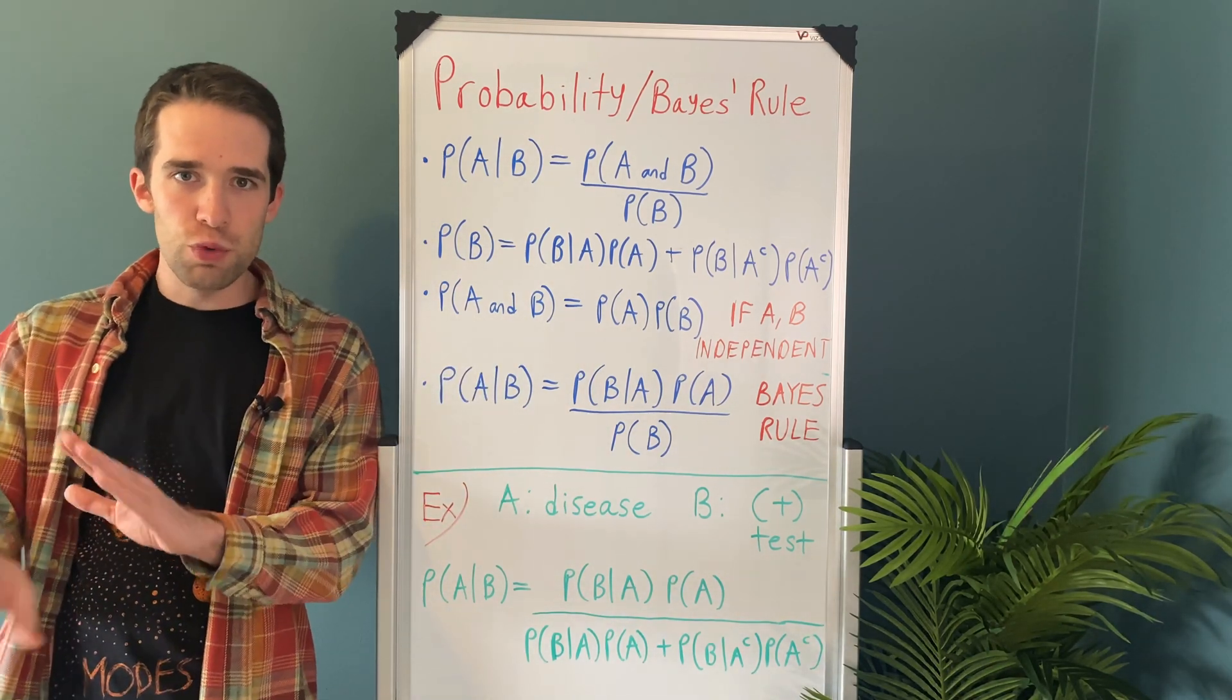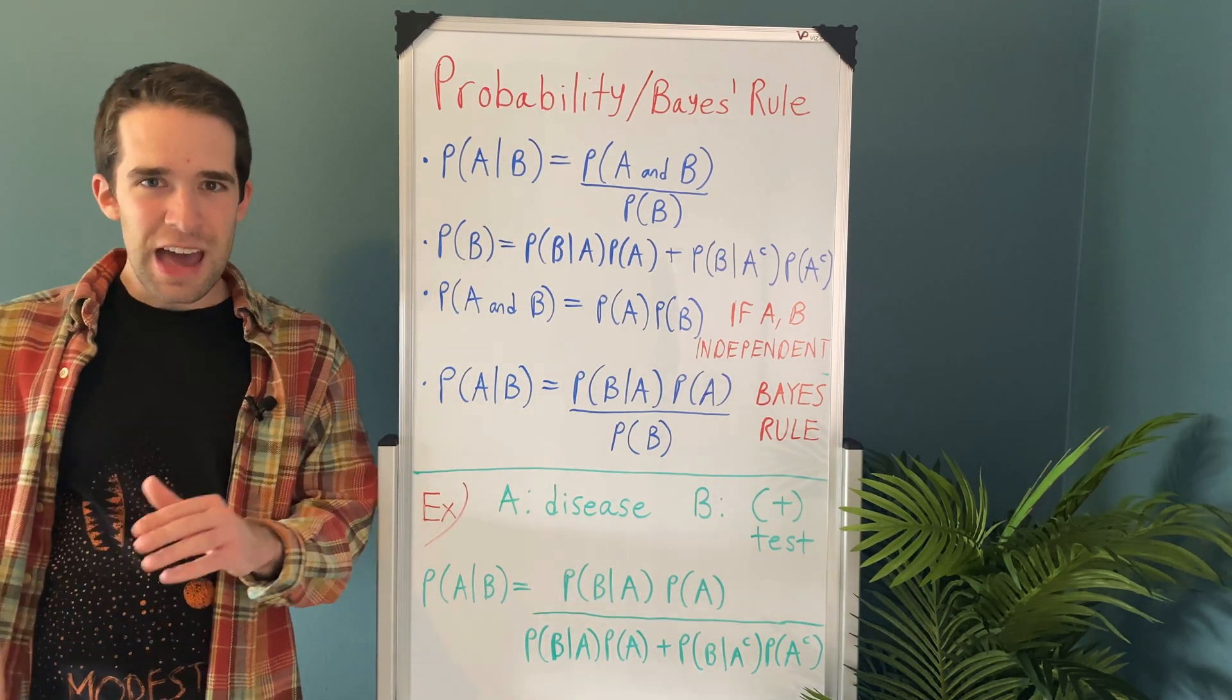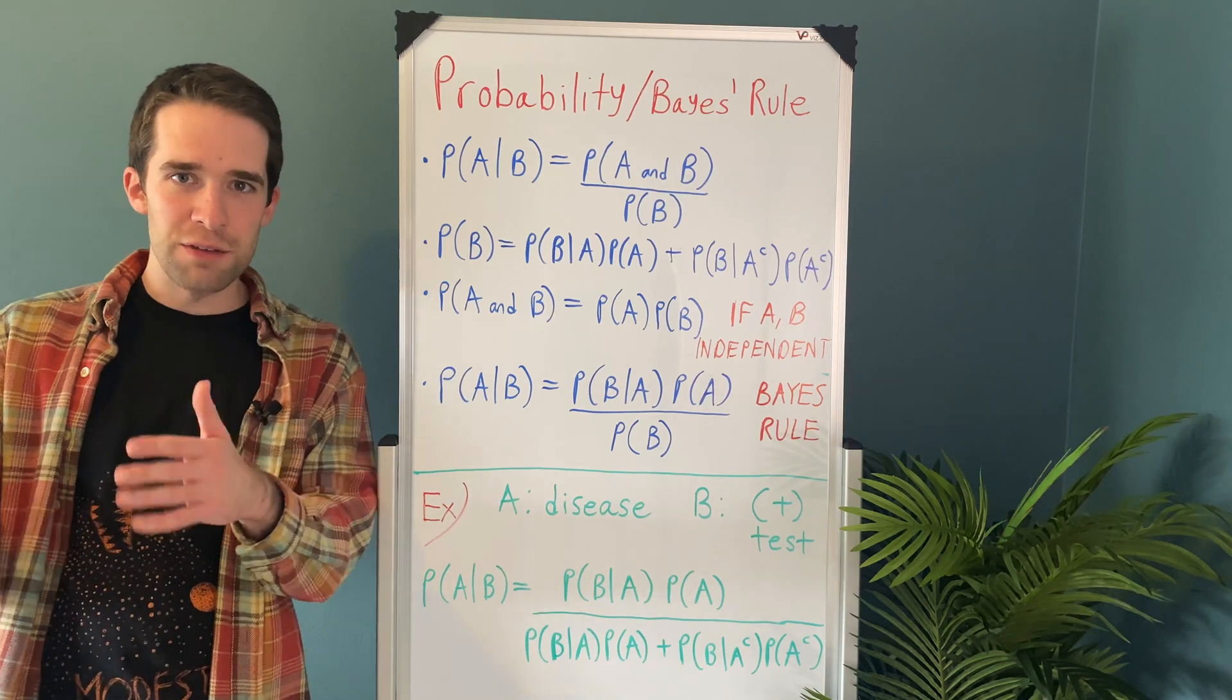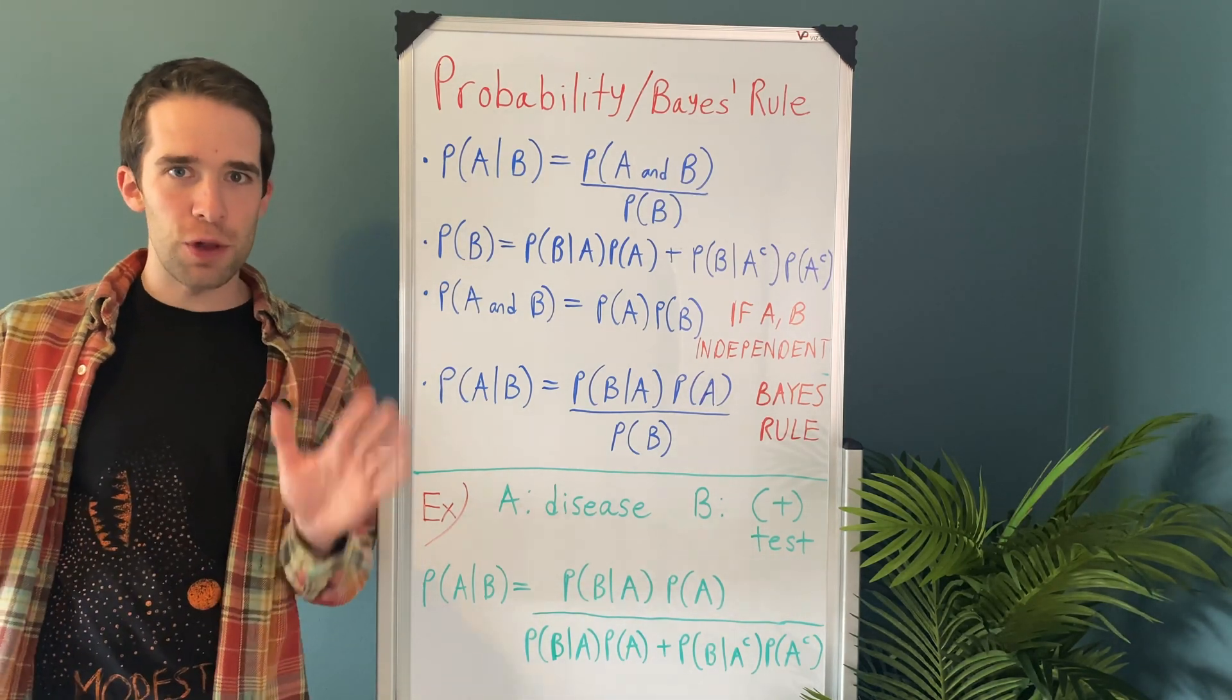That rule is going to be true regardless of whether the events A and B are independent or not. And it's a fairly straightforward exercise to derive, too. It's a simple rule, but it has incredibly powerful implications.